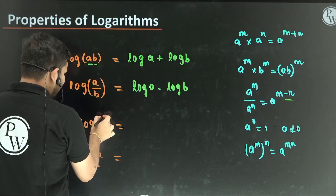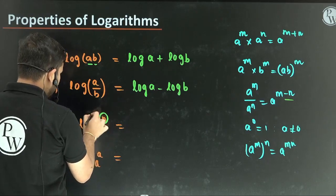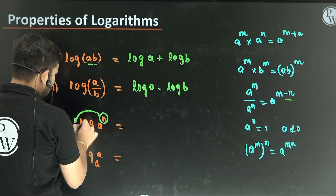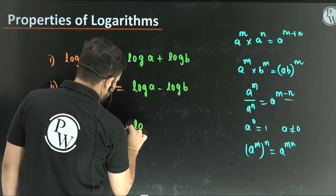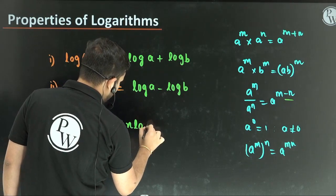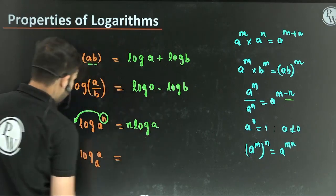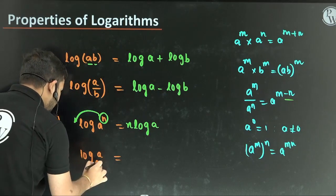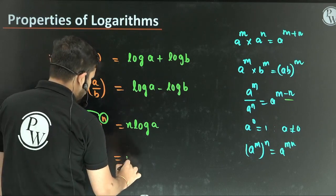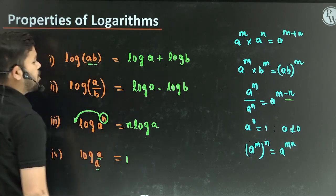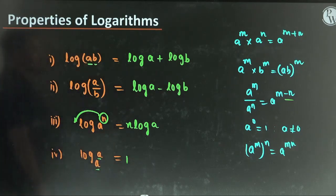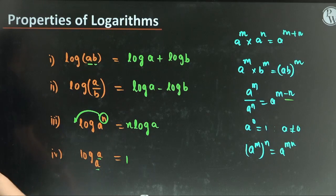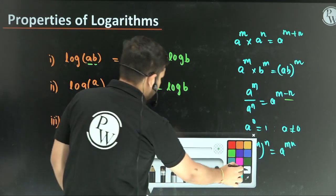Next: when there is an exponent N in the argument, we bring it out as a multiplier — that is N log A. Also, when the argument and base values are equal, the value simply becomes 1. I hope you understood all these things.